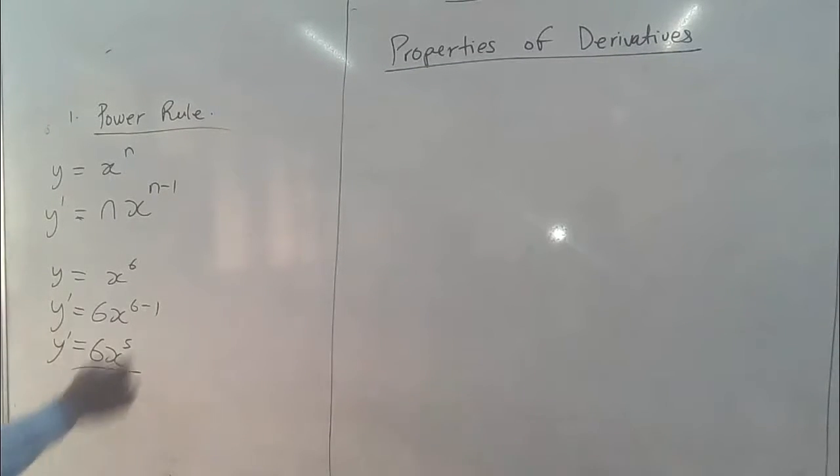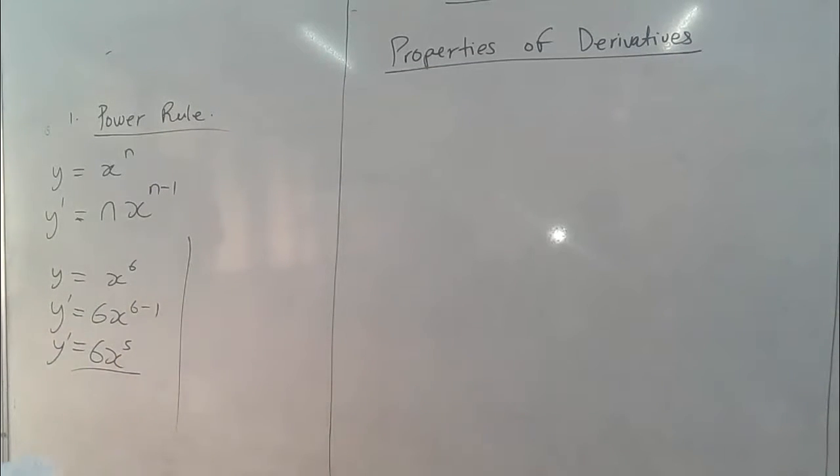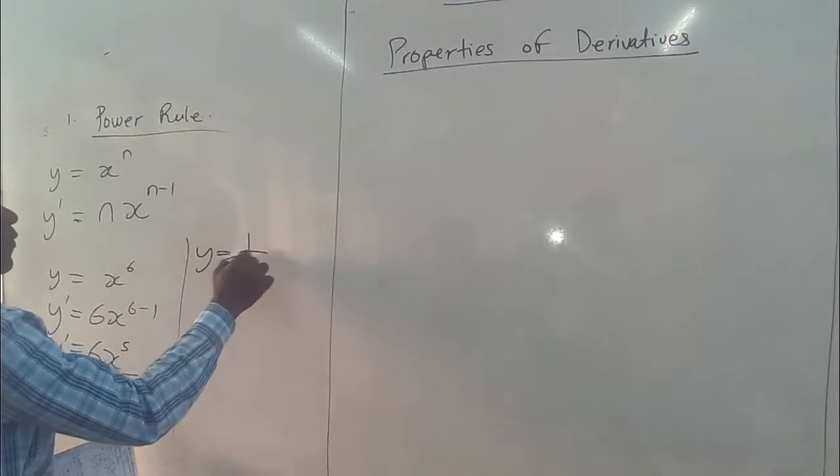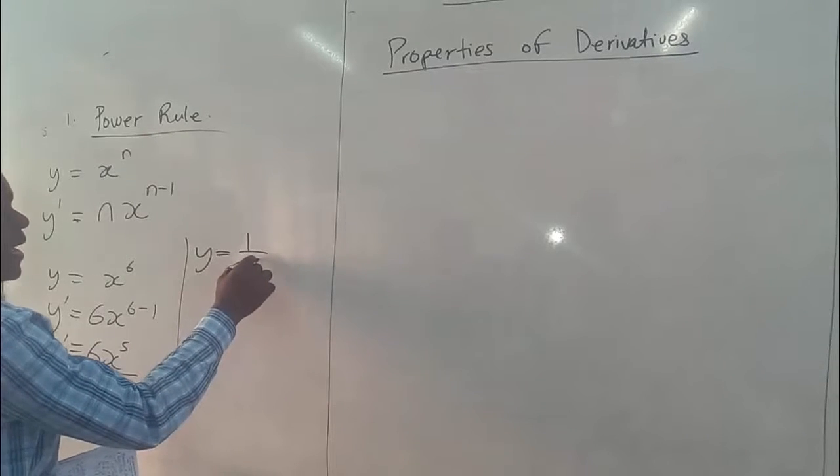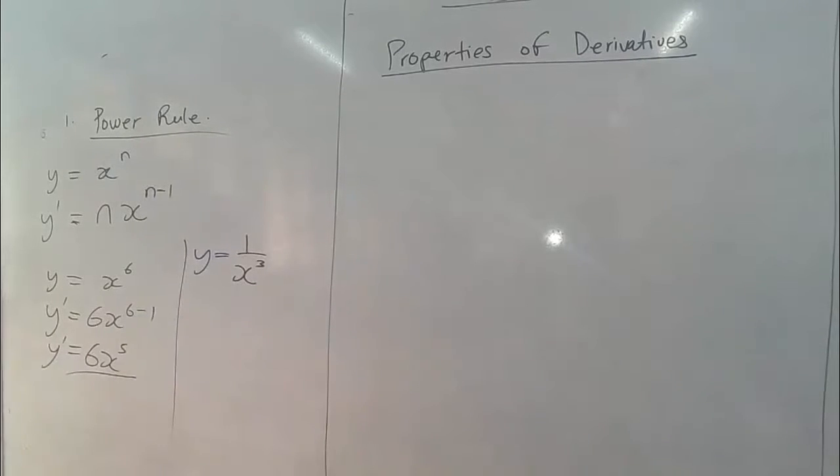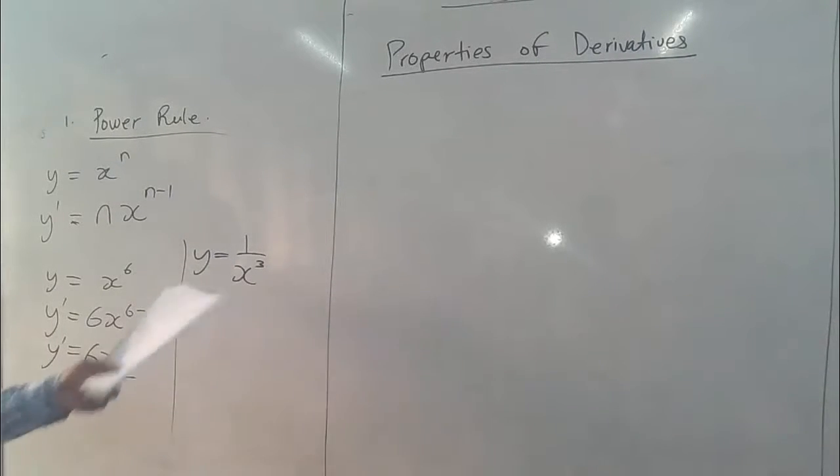That's an example. Let's take another one which will be a little bit complex. Assume you have y equals 1 over x cube. How do you find the derivative of such a rational function?